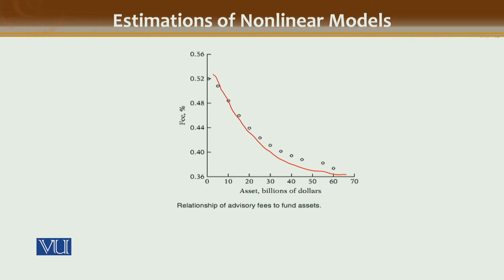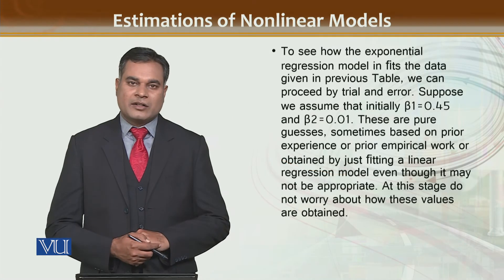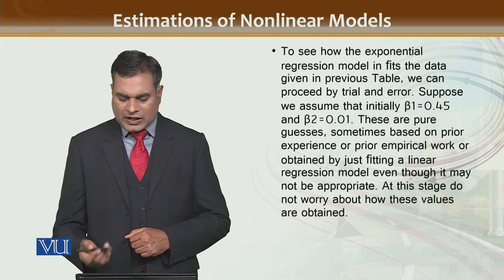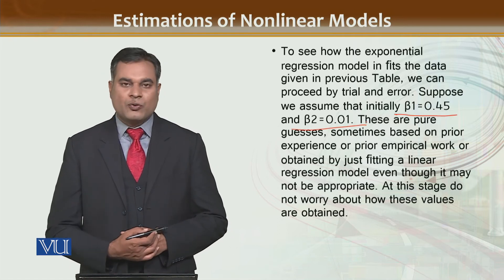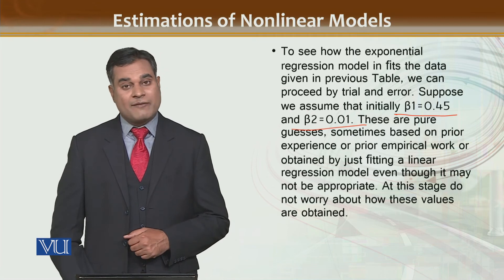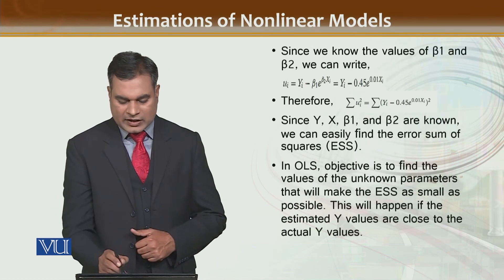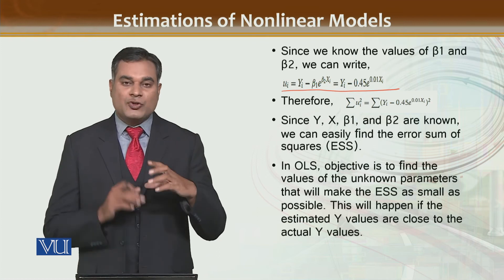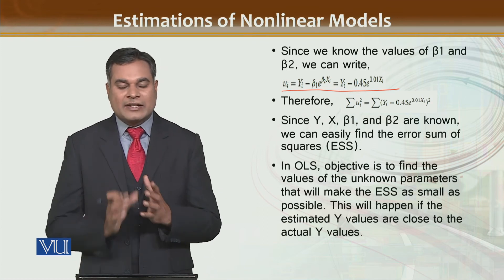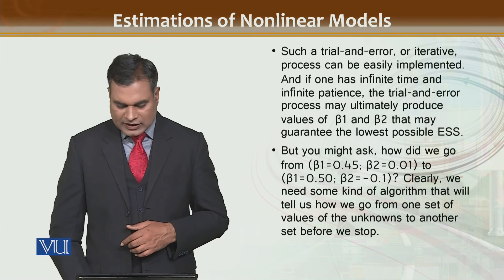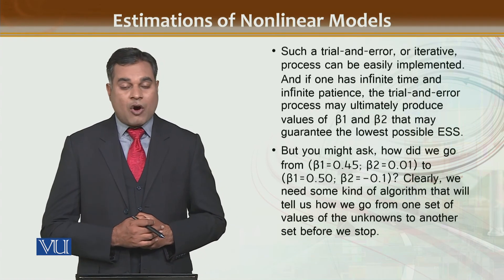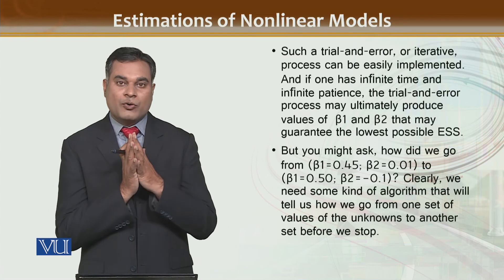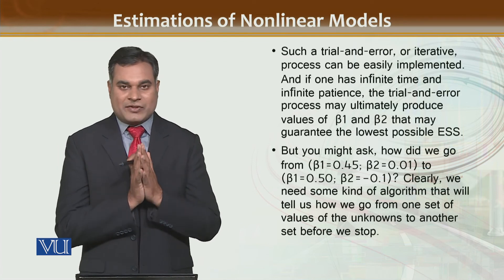Secondly, when estimating a nonlinear model, you need the values of beta 1 and beta 2 on the basis of trial and error — you don't have the exact values. You find them by checking where the residual sum of squares is minimum, and you must ensure that the residual sum of squares is minimized.